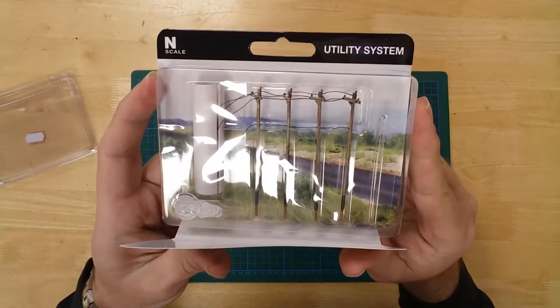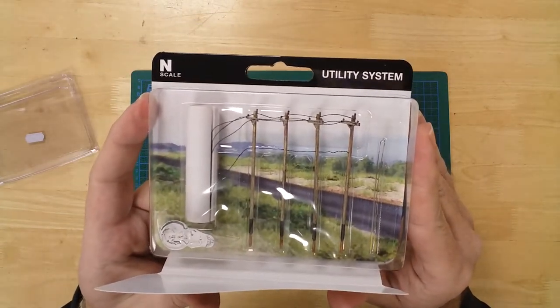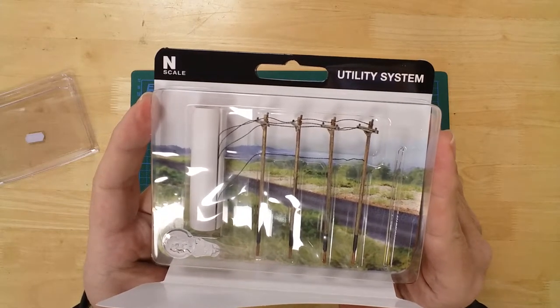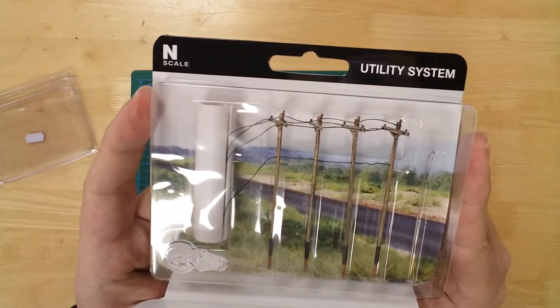The N-gauge pre-wired single crossbar pole set by Woodland Scenics. Poles measure approximately 65 mm in height.